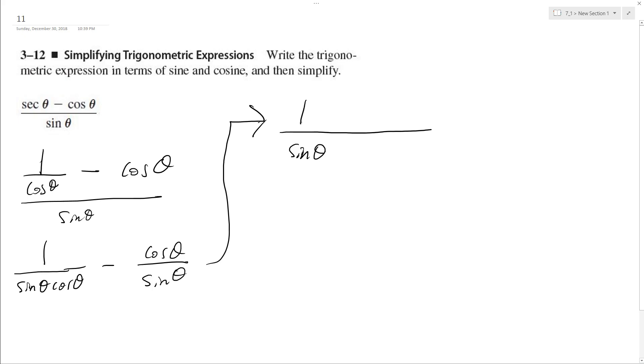This remains 1 over here, this remains 1, but I need a common denominator of cosine theta, sine theta. So the cosine theta on top gets multiplied by cosine again, so cosine squared theta, and then sine theta, cosine theta.